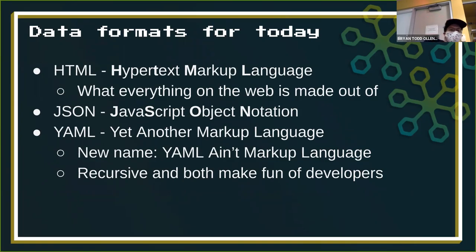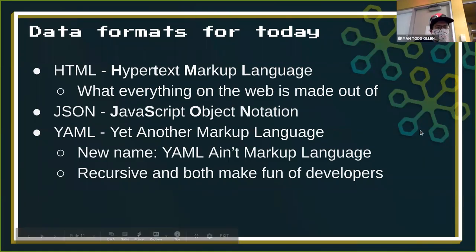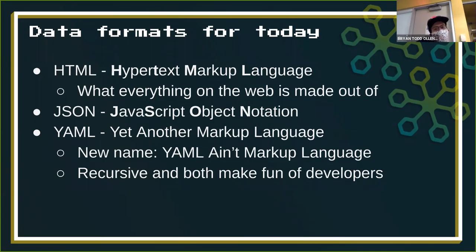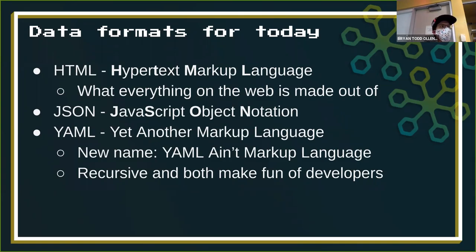Some data formats for today: HTML, short for HyperText Markup Language — this is what every web page is made out of. Then there's JSON, short for JavaScript Object Notation, because that rolls right off the tongue. And then about 500 different formats later, there's YAML — originally short for 'Yet Another Markup Language,' as in 'yeah, I know it's yet another way of marking up material.' But they actually changed the name to make people even more angry — it's recursive: YAML Ain't Markup Language. So you're always going 'YAML Ain't Markup Language — oh but you use the word in the definition' — and you just keep recursively doing it. It's a very trolly thing.